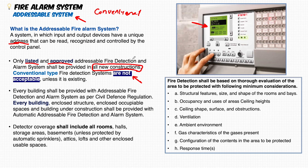Whenever you start a design for any fire alarm system, you should use the addressable fire alarm system. The conventional type is only accepted if the building is existing. This course is based on the UAE Fire Life Safety Code 2018 Chapter 8 and NFPA 72, both related to the fire alarm system.